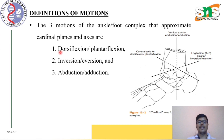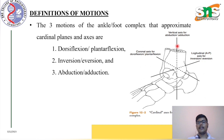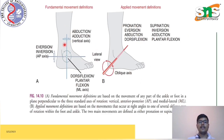The three motions of the ankle and foot complex that approximate the cardinal planes and axes are: dorsiflexion and plantar flexion, inversion and eversion, and abduction and adduction. Dorsiflexion and plantar flexion occur in the sagittal plane around the coronal axis. Inversion/eversion and abduction/adduction occur around the vertical axis. These are the fundamental movement definitions.